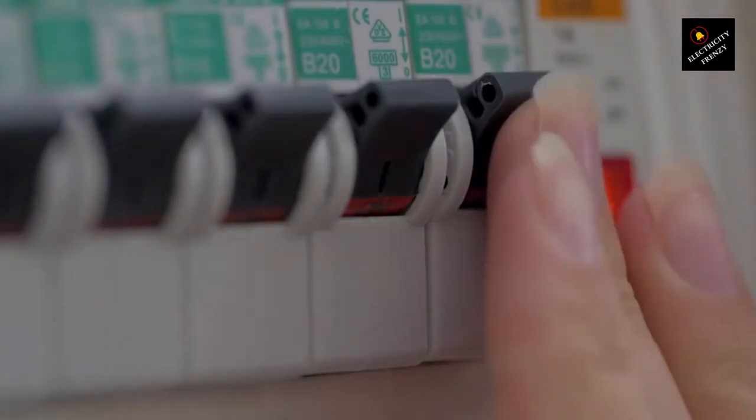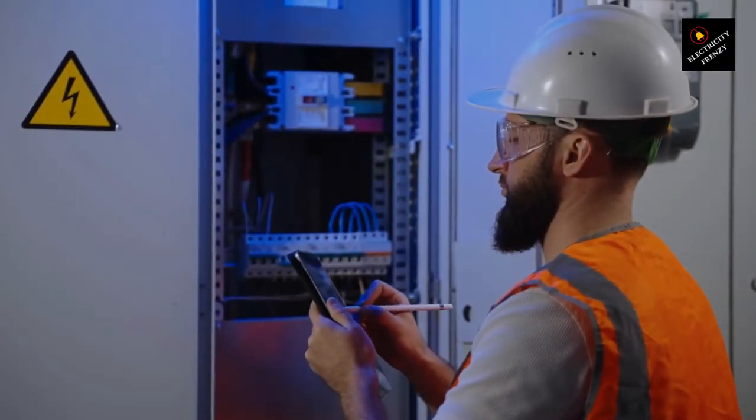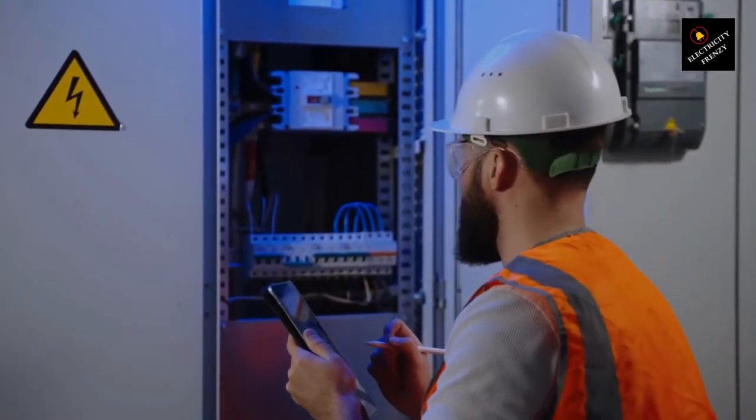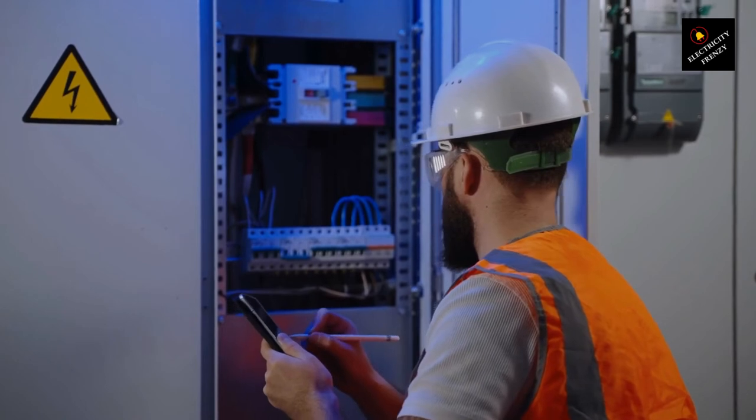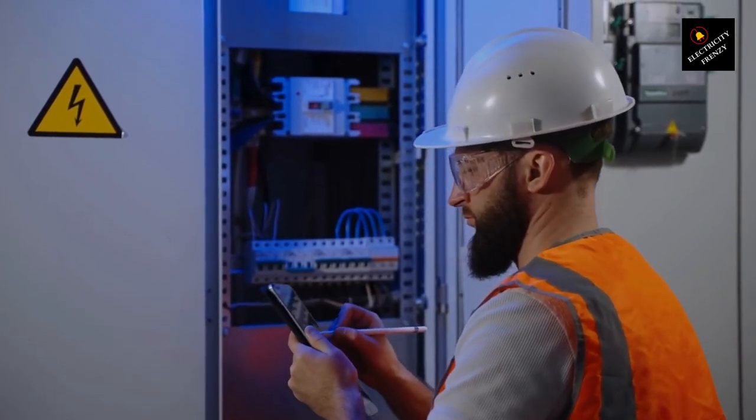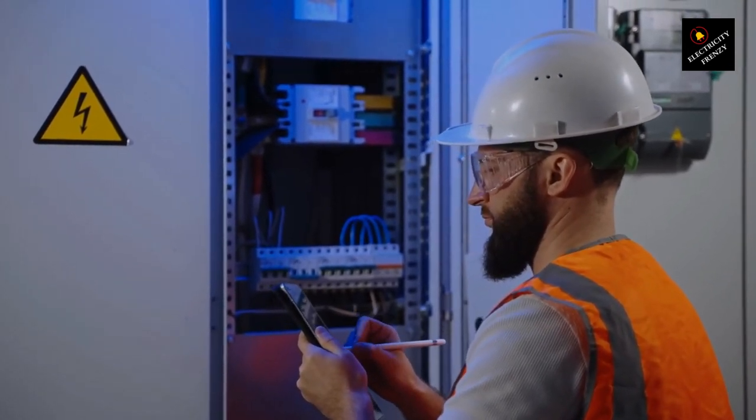That's it, homeowners. Now you know what to do when your circuit breaker keeps tripping immediately after resetting. Remember, don't rush to reset it right away, especially if it trips immediately again. Instead, follow these steps to identify the cause and address the issue. And if you're ever unsure or uncomfortable with electrical troubleshooting, always seek the help of a qualified electrician to keep yourself safe.